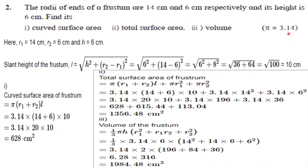Value of pi you have to use 3.14. Now this is a 3 to 4 mark sum. Write all the given things: R1 is 14 cm, R2 is 6 cm, height is 6 cm. Find out curved surface area, total surface area, and volume of the frustum of cone.